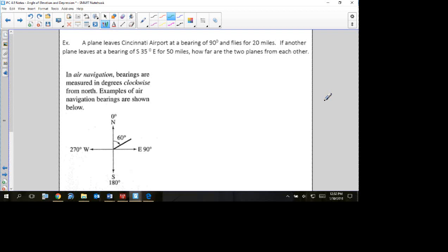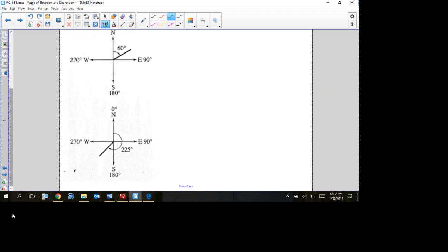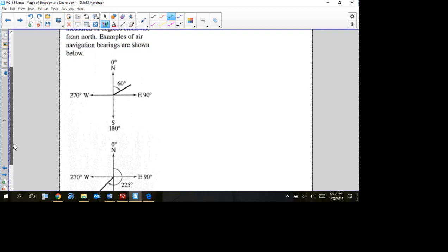If it's 60 degrees, you start and then this one would be 225 degrees, so you start north and go all the way 225 degrees. If they didn't tell you like northeast or southwest or something, if it's in air navigation, that's what you would use.